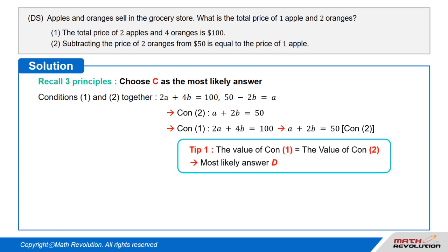So the answer should be D by tip 1, which states that it's about 95% likely that D would be the answer when the value of condition 1 is equal to the value of condition 2.